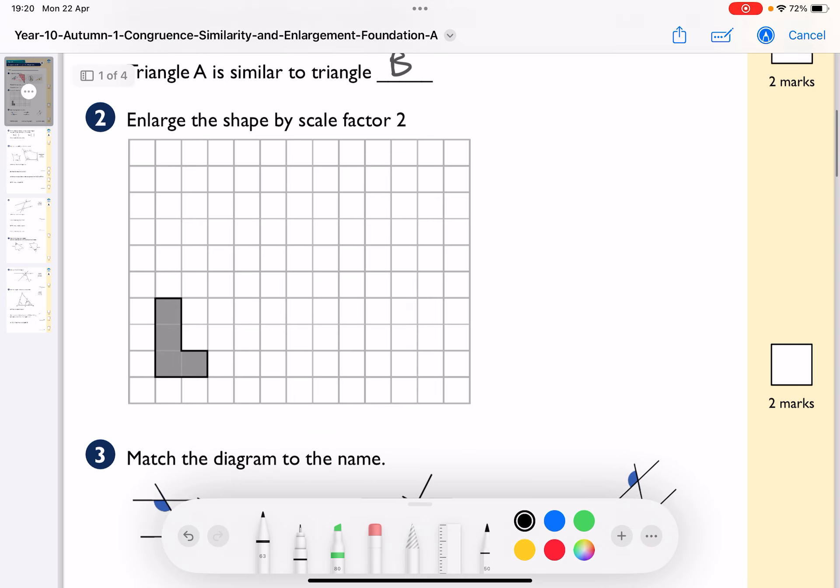Next question, enlarge the shape by scale factor two. When I do these, I look at the size of it. It's two across, it's three up, it's one here, one here, two here, and one here. So essentially I've got to multiply every side by two.